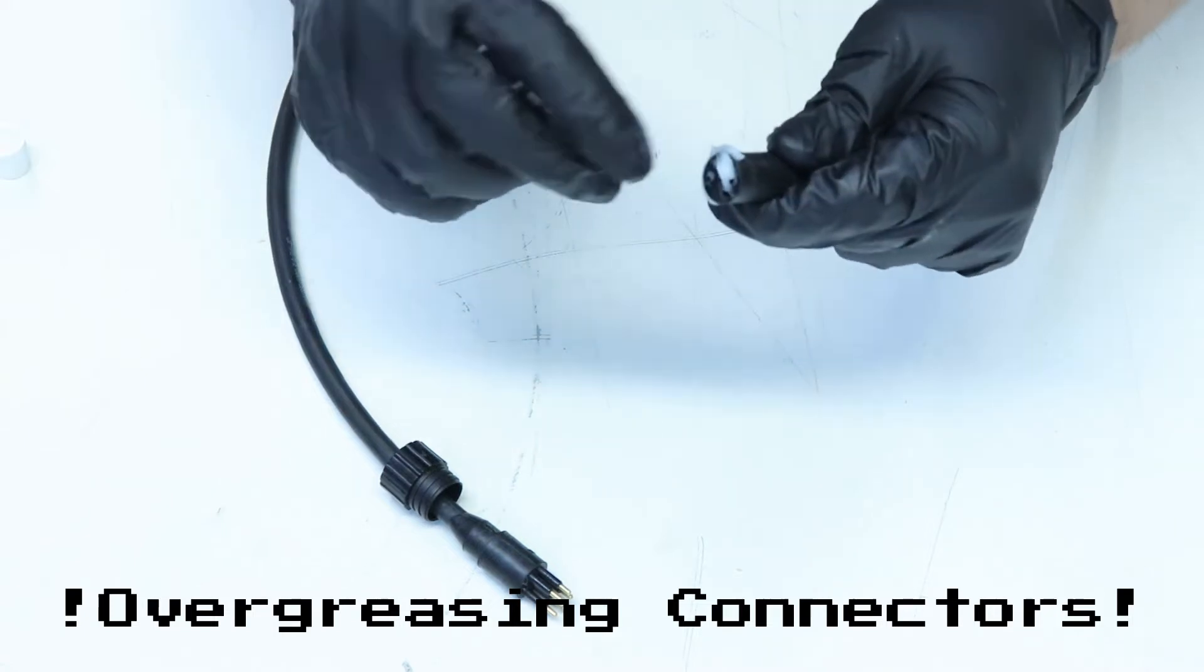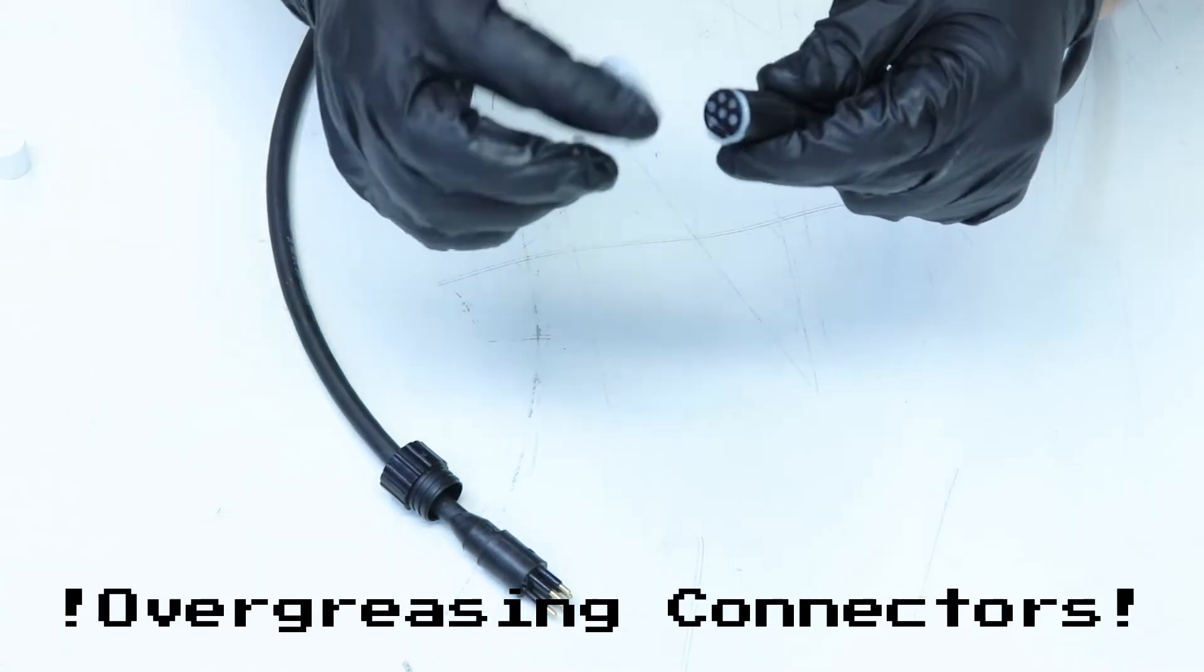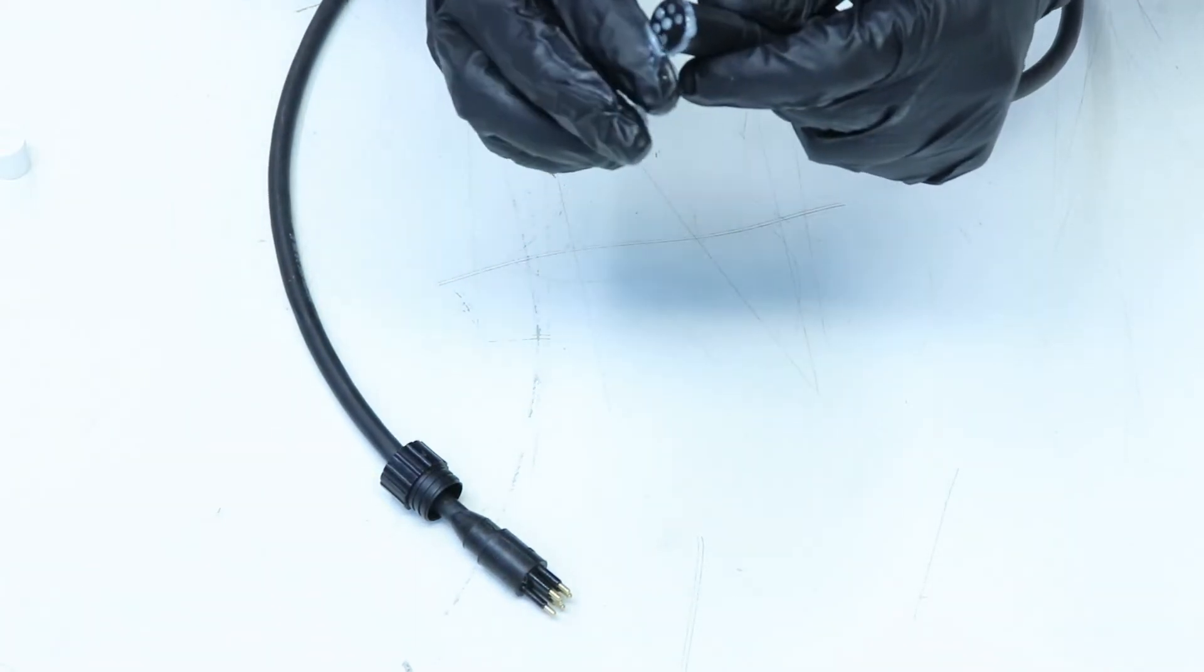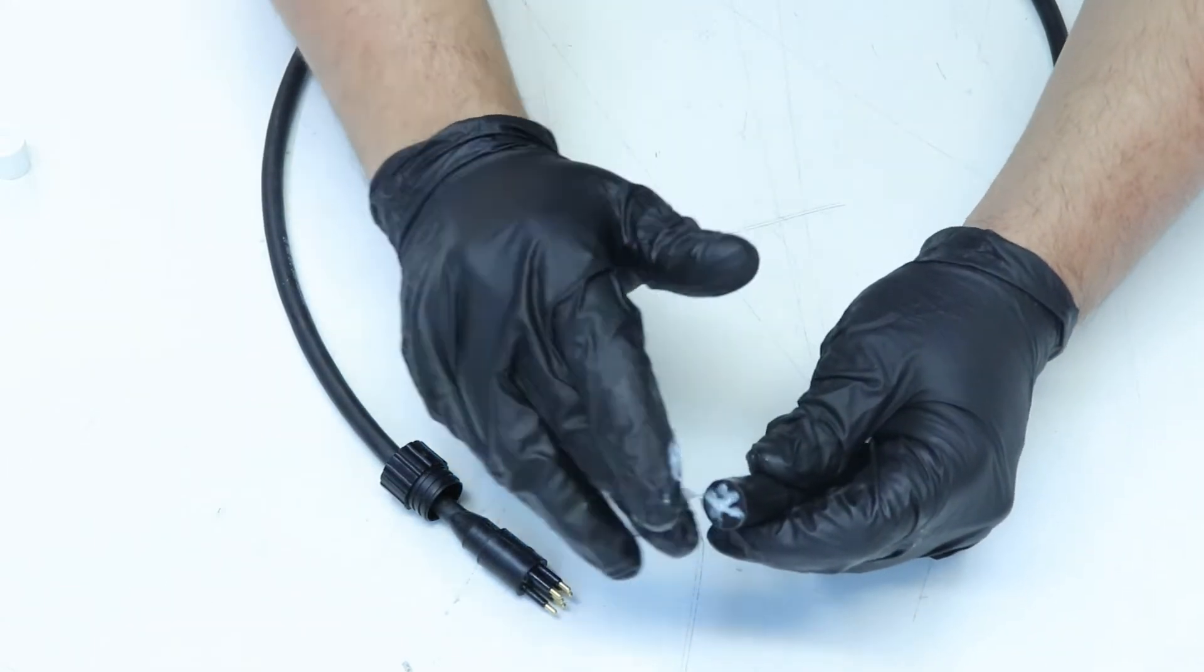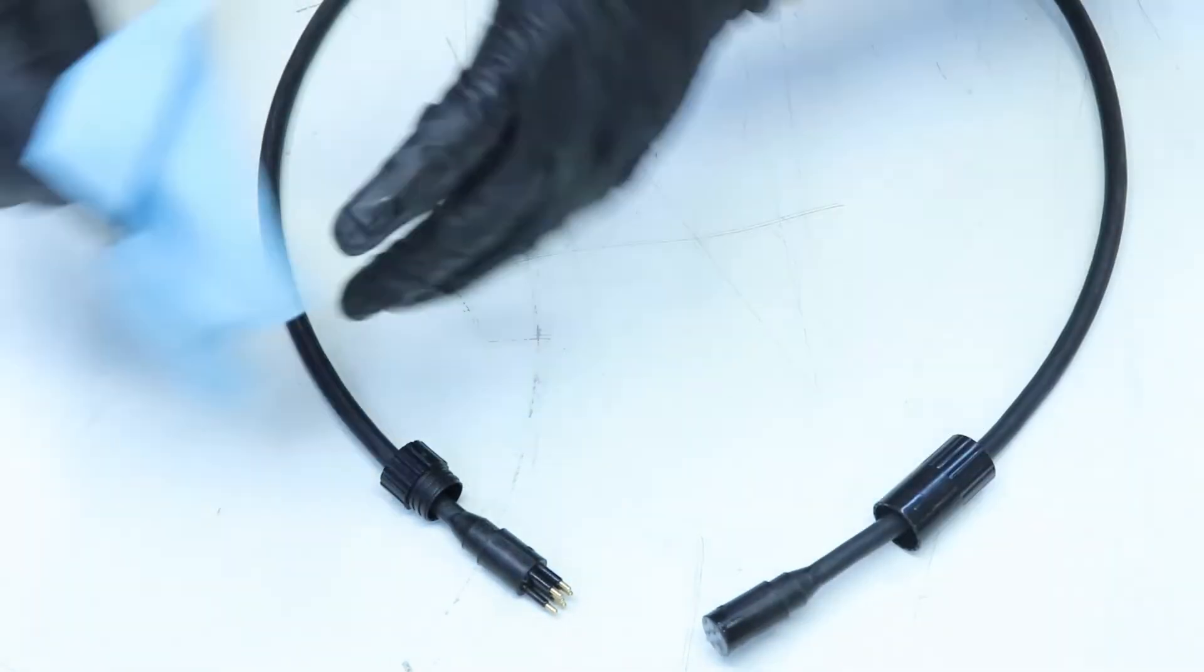Over-greasing the connector will not harm it, but it may become difficult to fully mate it. Repeat the mating and decoupling process until the rubber faces are flush.